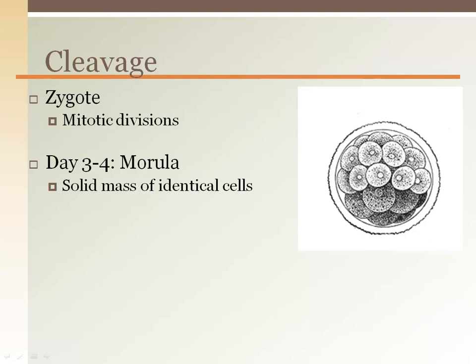Simply, the size of the pre-embryonic ball of cells after five days is no bigger than the ovulated egg out of the ovary. This is important because it prevents the ball of cells from getting stuck in the uterine tube.